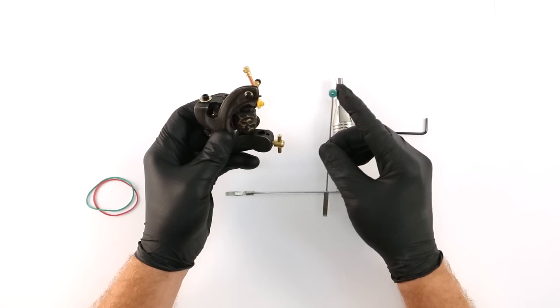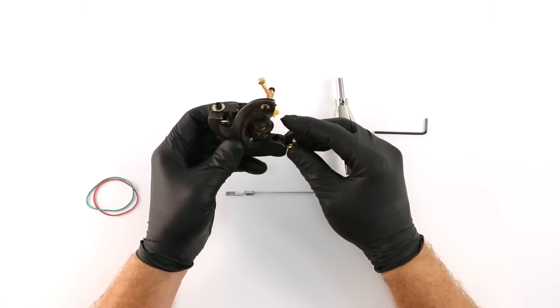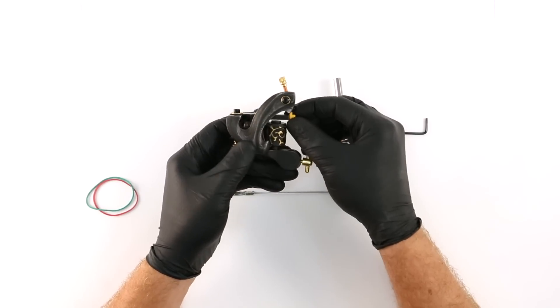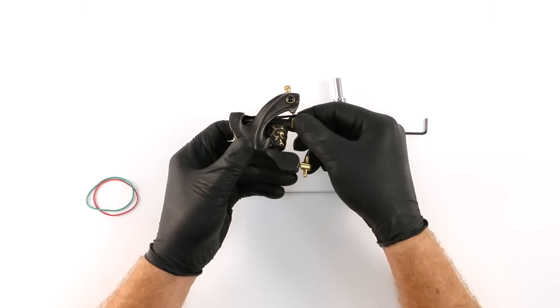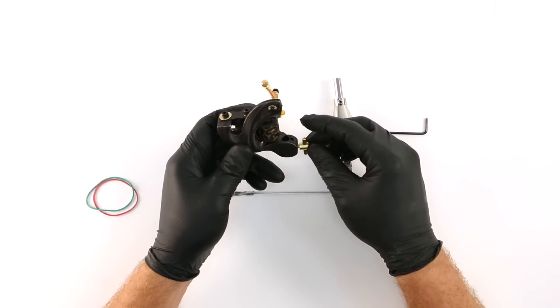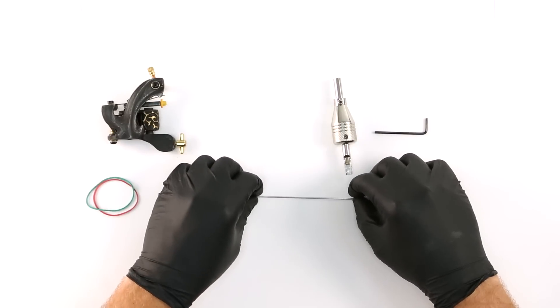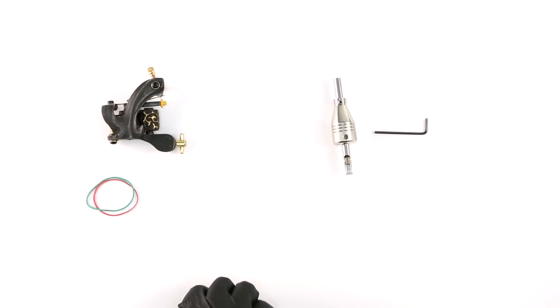You may find that different grommets and nipples purchased from one company are made from softer or harder rubber than the other. The more pliable the rubber the softer the needle hit, while the more rigid the rubber the harder the needle hit. Shop around and when you find a brand you feel most comfortable with, stick with it.